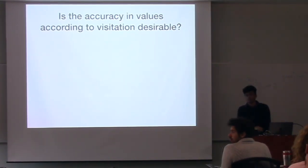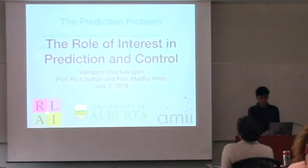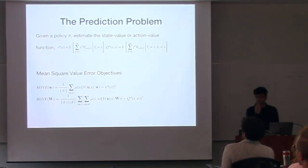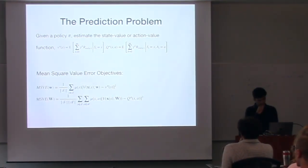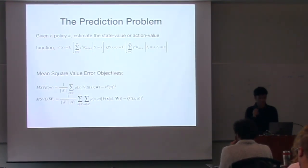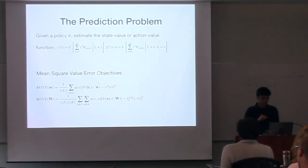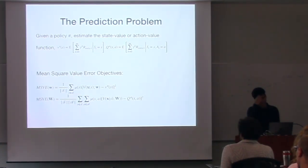Audience: In the mean squared value error, why do you have both one over the size of S and also mu? Speaker: I guess I can remove that because you have mu. Mu is already a distribution over states, so yes, I shouldn't have the 1/|S| there. You're right.